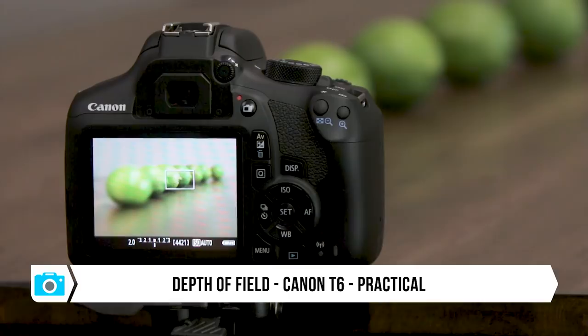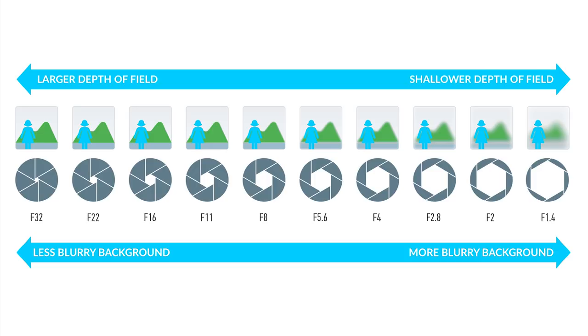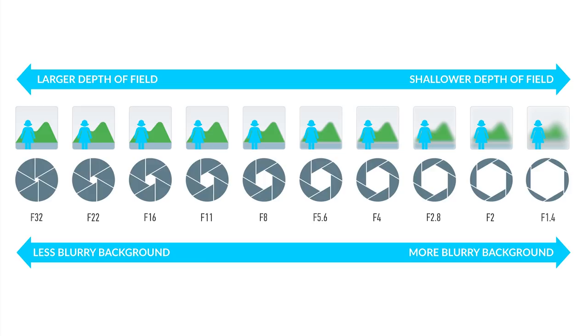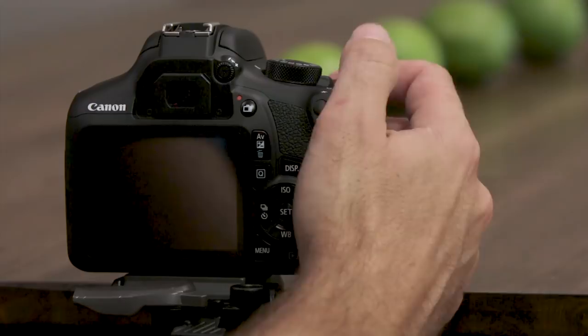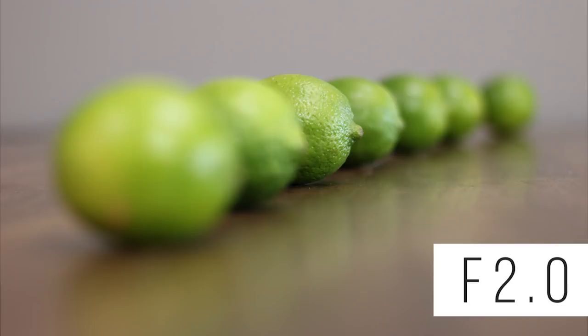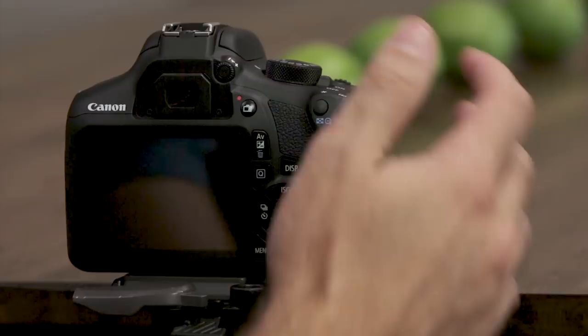I want to take a second and demonstrate how depth of field works and how aperture controls your depth of field. Remember, the larger size hole lets more light in but also creates a shallower depth of field, so less distance is actually in focus. We're starting with f/2.0, which is a very large aperture — a small number but a larger size hole — which lets more light in and creates a shallower depth of field.